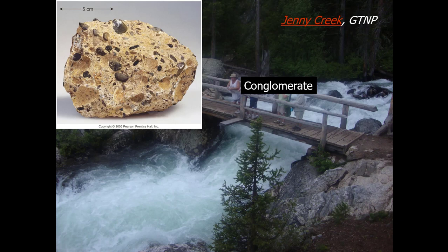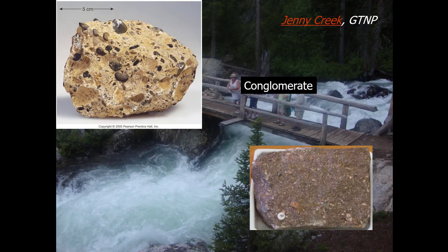Traveling a little bit further downslope, the bigger particles break into smaller and smaller medium-sized particles. We would find a rock that is still poorly sorted but now red due to oxidation of iron. The particles are smaller in size, and this rock — which you should recognize from your lab — is called arkose.